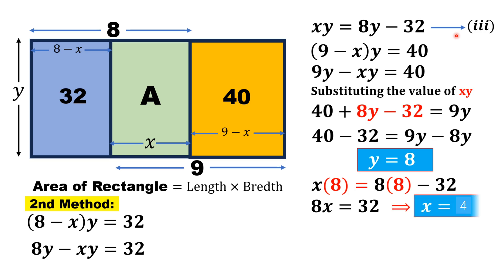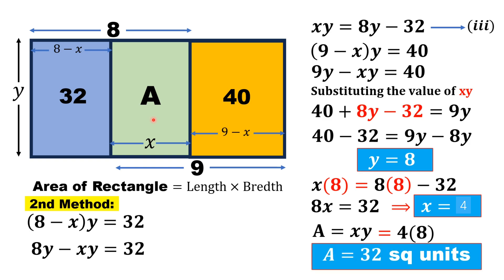Substituting y = 8 into equation 3: x·8 = 8×8 − 32 = 32, so x = 4. Now that we have both x and y, the area of the green shaded rectangle is A = x·y = 4×8 = 32 square units. That is the answer. Thank you for watching.